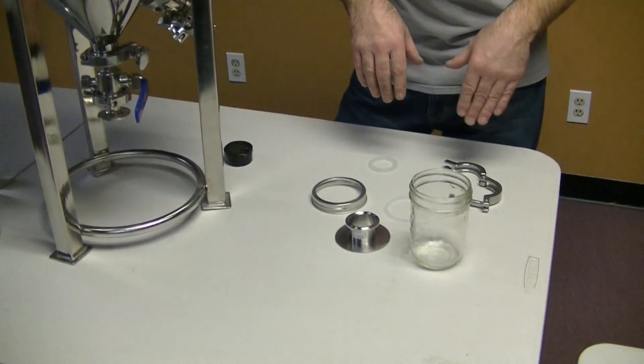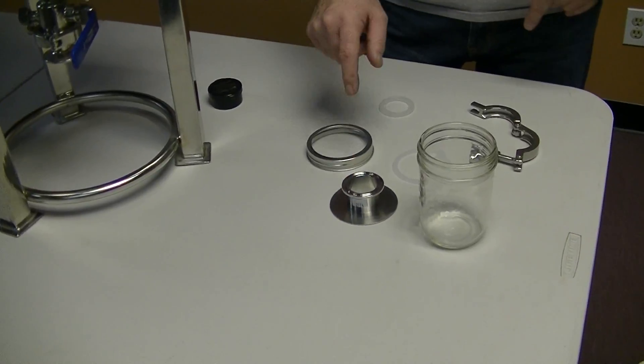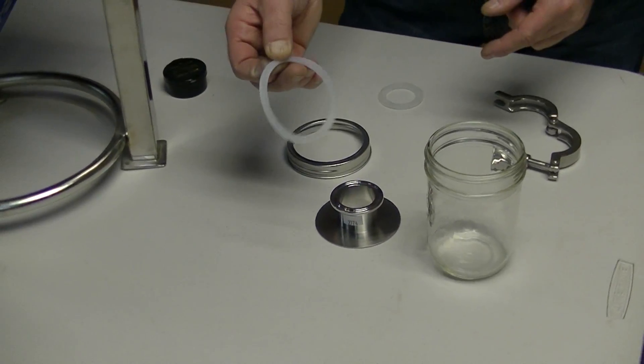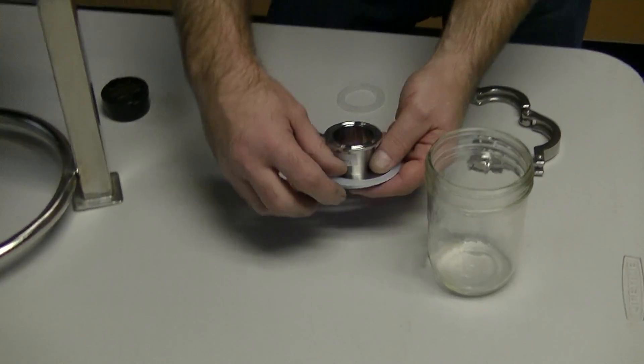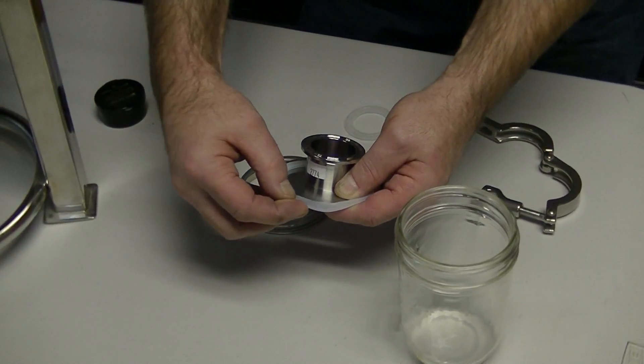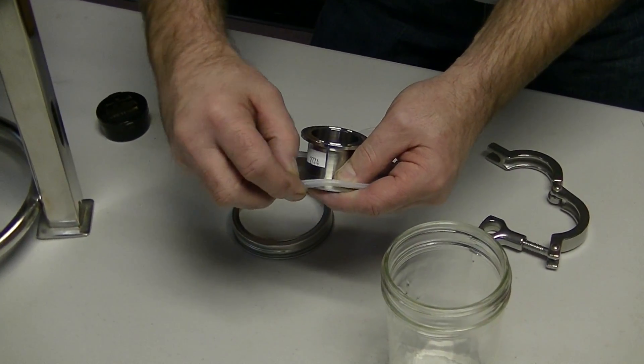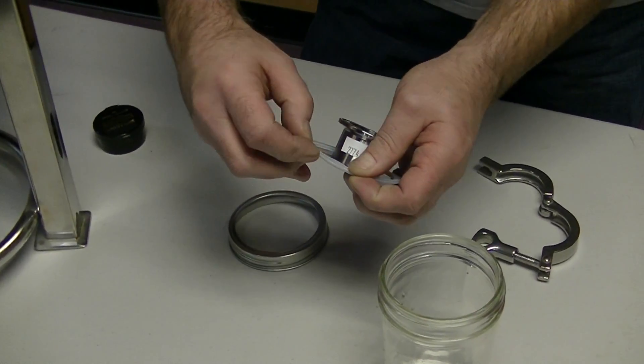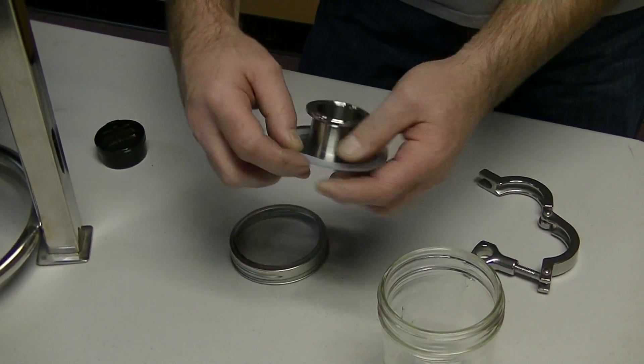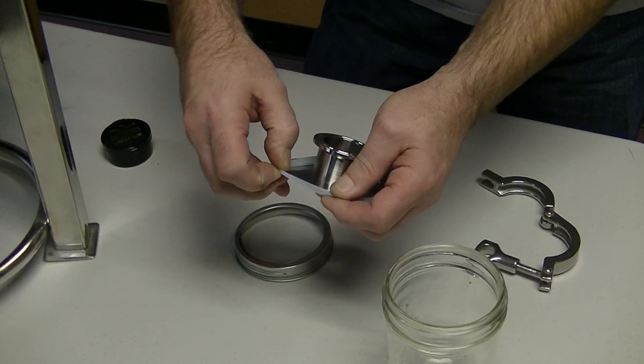What we have here is our canning jar yeast harvesting lid and our gasket. What we're going to do is throw our gasket on here. This is a V-style gasket. It folds over our lid like so.